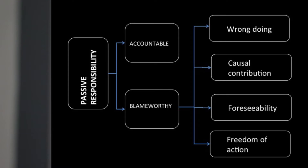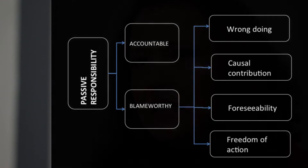The first criterion is wrongdoing — when you violated a norm or did something wrong. In this case we look at ethical frameworks, conscience, or a code of conduct, whether it's a professional code of conduct or an organizational code of conduct. Causal contribution is the second criterion — when your action causes something to happen. Failure to act is also often considered a causal contribution, so not making a decision or acting on something will also be considered causal contribution.